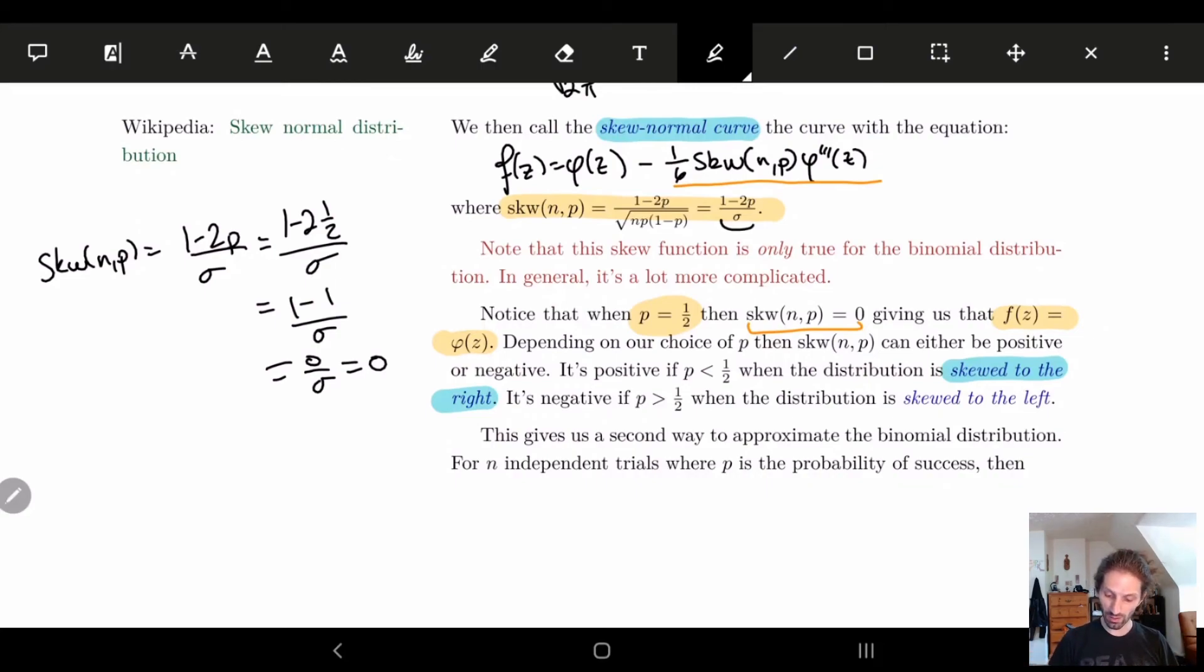If p is greater than 0.5, then it's going to be skewed a little to the left. So it's dependent on this p that we put into this function.